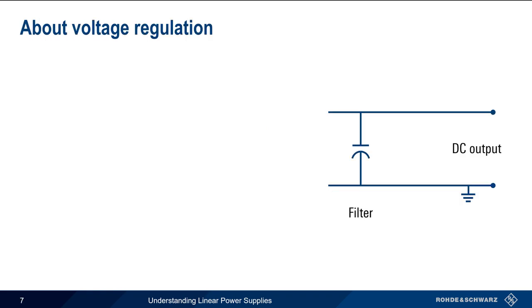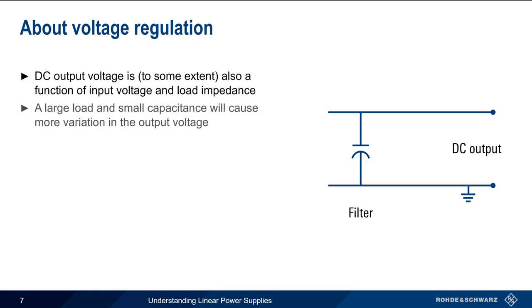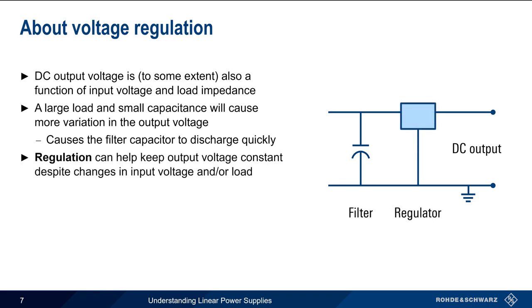At this point we have what's sometimes called an unregulated linear power supply. The DC output voltage of a supply is, to some extent, dependent on the input voltage and especially on the load impedance. If the load impedance is high and/or if we're using a smaller filter capacitor, this can lead to significant variation in the supply's output voltage, since in both cases the capacitor will discharge more quickly. Therefore, regulation is often added to power supplies in order to help keep output voltage constant in the face of changing input voltage or load impedance.